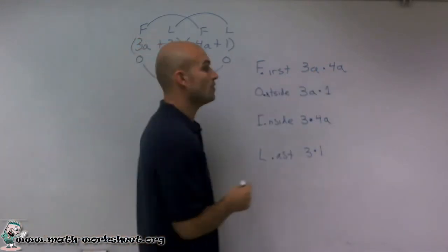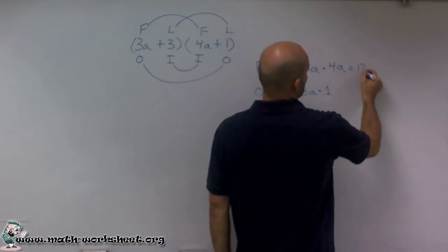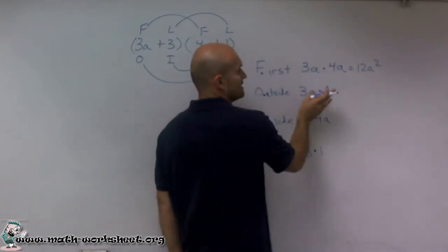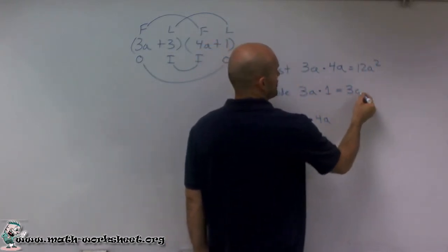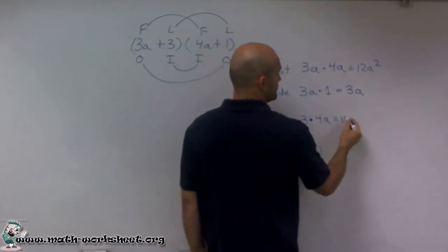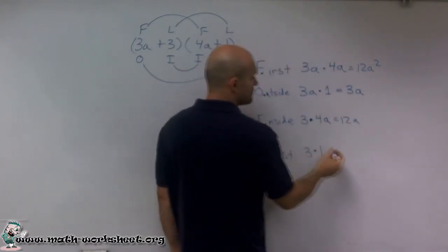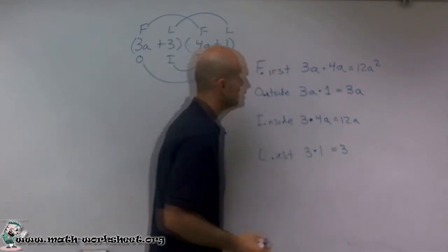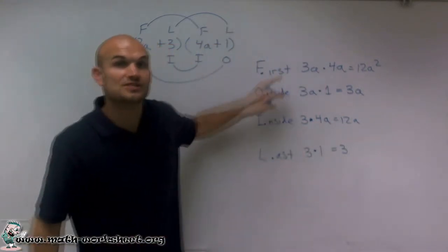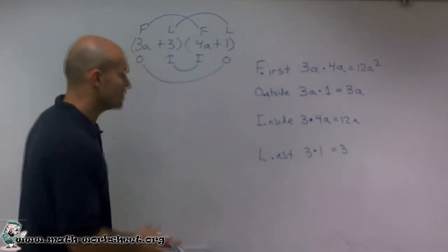So 3a times 4a is going to equal 12a squared. 3a times 1 equals 3a. 3 times 4a equals 12a. And 3 times 1 equals 3. So that is the product of each of my four products.